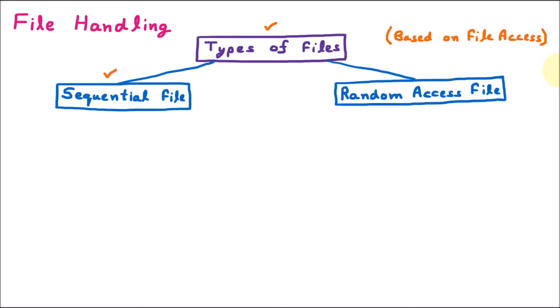First, we are learning the sequential file. Let us suppose we are creating a file with elements in sequential order — 1, 2, 3, 4, 5, 6 and so on. The first point about the sequential file is that data is stored in sequential order. If we have to search record 3, we have to move one by one: first 1, then 2, then 3. So data will be stored and read sequentially.